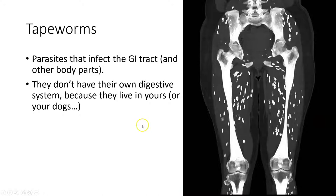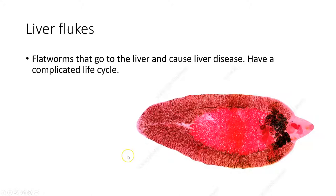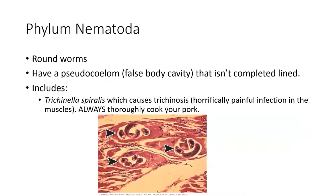Flukes are another flatworm. American human infections are rare, but they live in accessory digestive structures — most likely the liver — causing damage that can lead to cirrhosis, liver failure, and the need for a transplant. Liver flukes have a complicated life cycle usually involving a snail. After emerging from the snail into water, their larval form can enter through a cut or wound on your foot and travel to the liver. Always cook your meat.